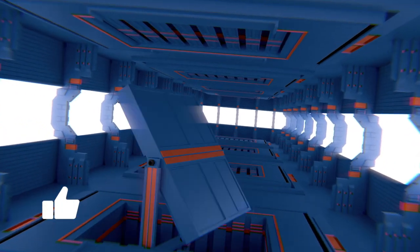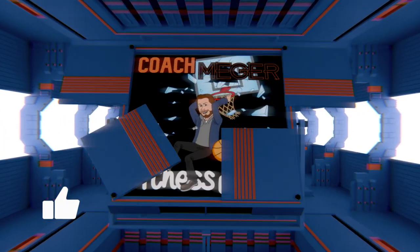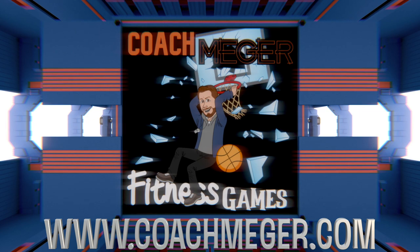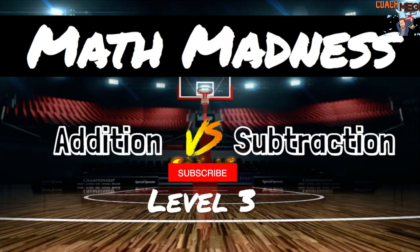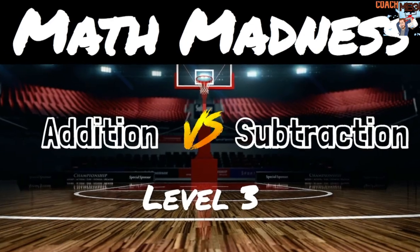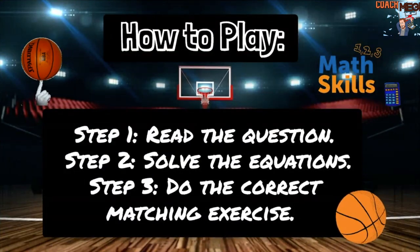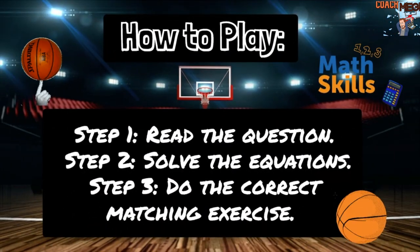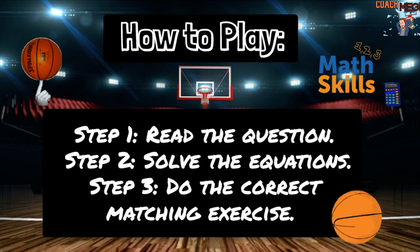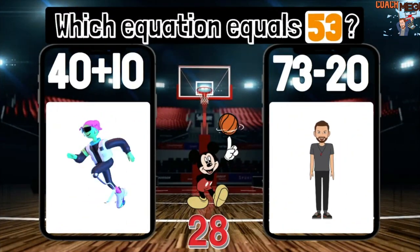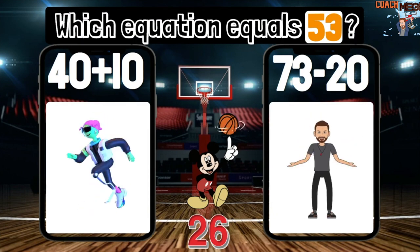Welcome to NBA Jazz! Math Madness Edition vs. Subtraction Level 3. How to play: Step 1, read the question. Step 2, solve the equations. Step 3, do the correct matching exercise. First up — which equation equals 53?